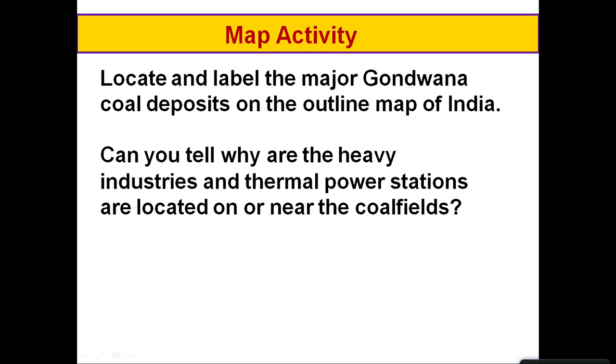As a map activity — a treasure hunt — can you locate and label the major Gondwana coal deposits on an outline map of India? Also consider: since coal is a major source of thermal electricity, why are heavy industries and thermal power stations located on or near coal fields? The reason is that coal is a weight-losing raw material — heavy and bulky — adding significantly to transportation costs.